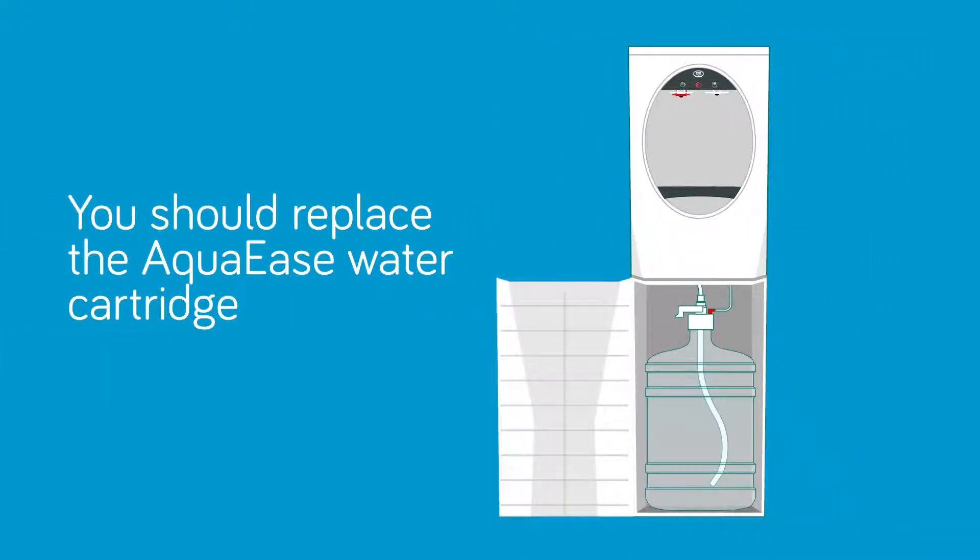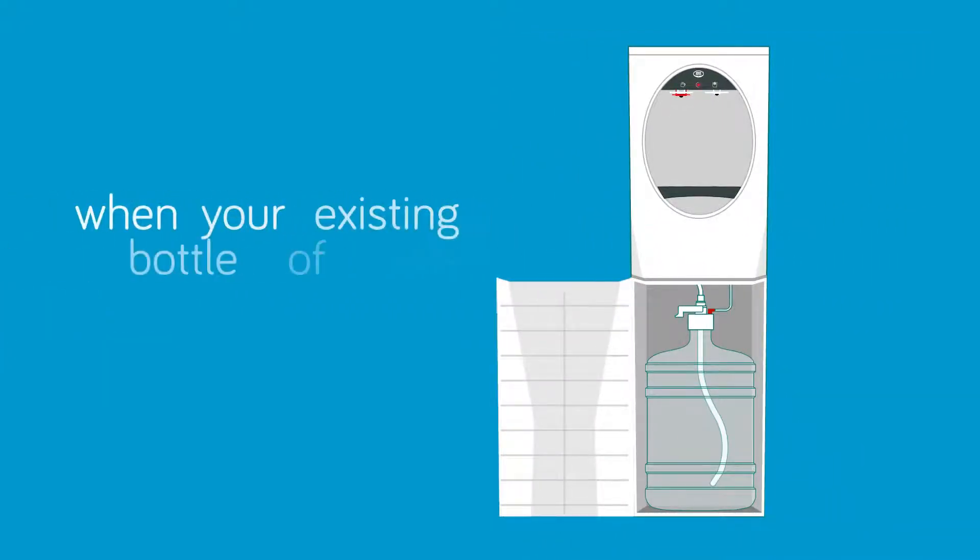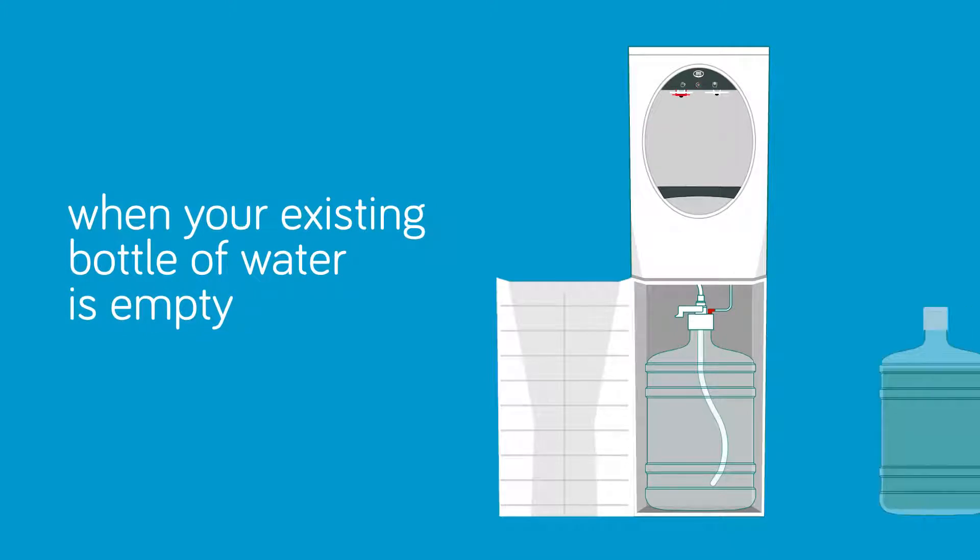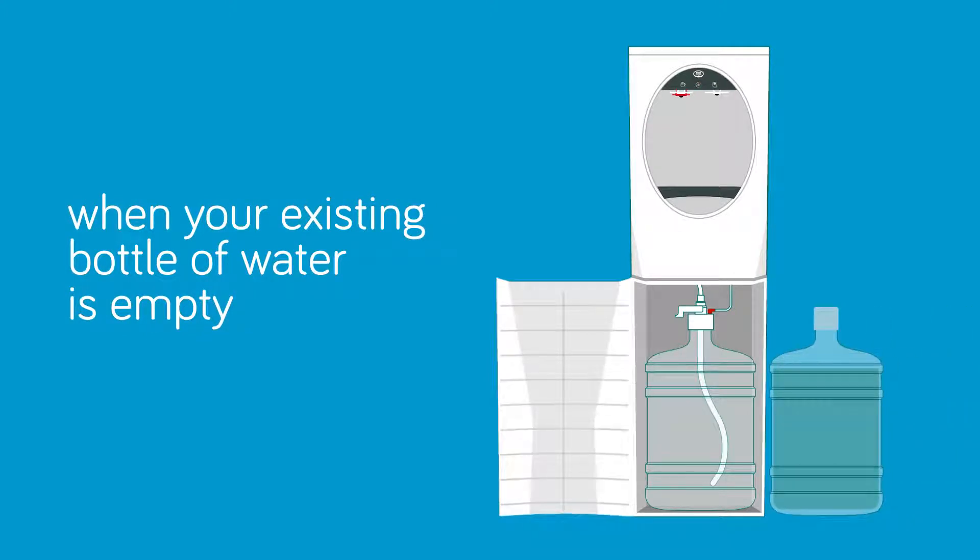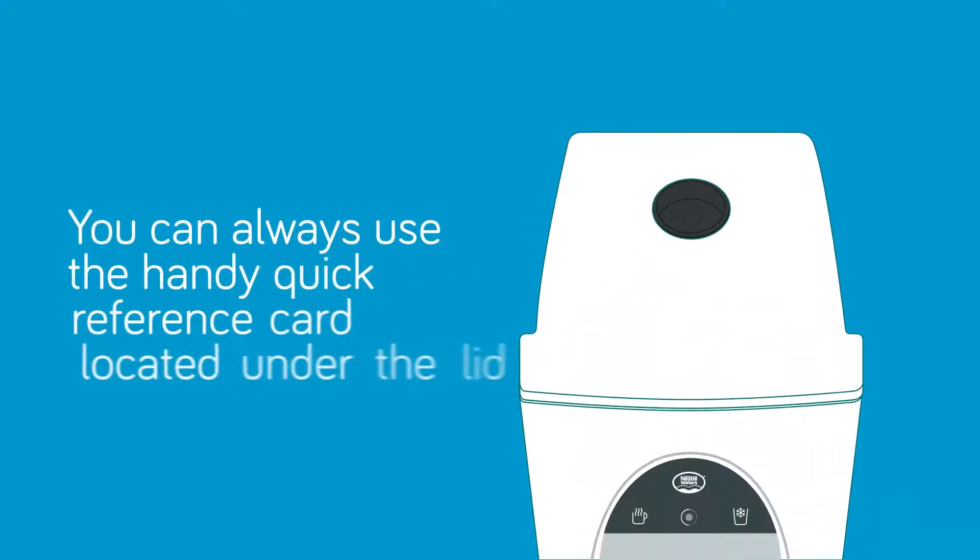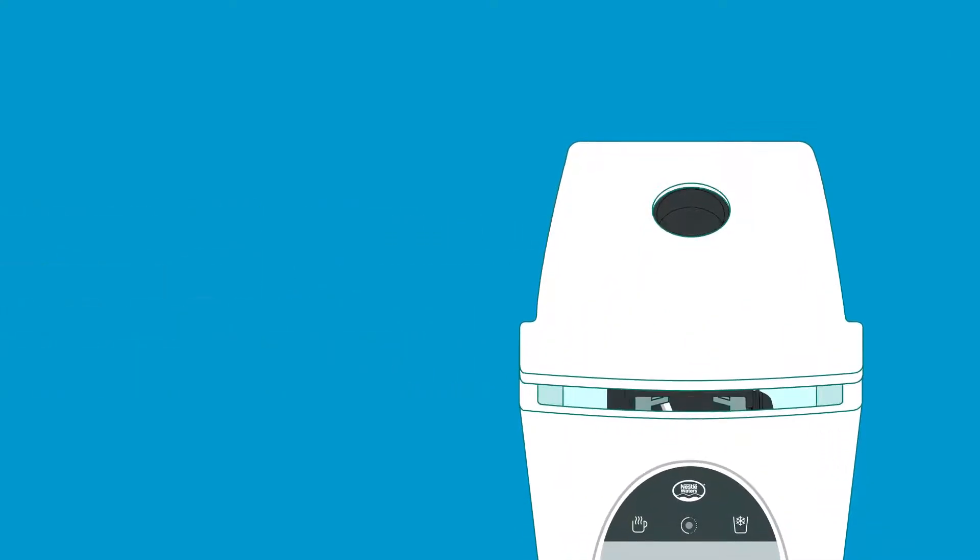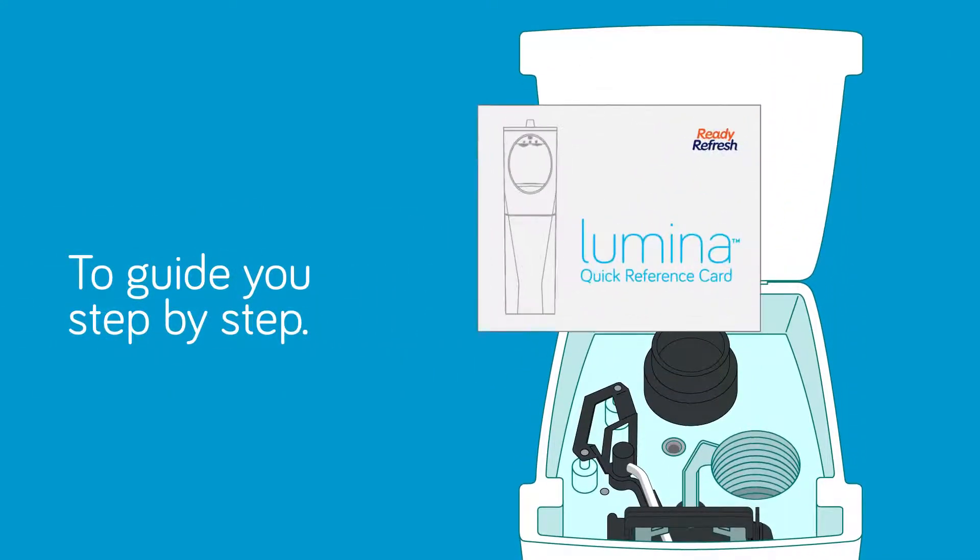You should replace the Aqua Ease water cartridge when your existing bottle of water is empty so you can enjoy a new bottle after completing the replacement process. You can always use the handy quick reference card located under the lid to guide you step-by-step through the Aqua Ease change process.